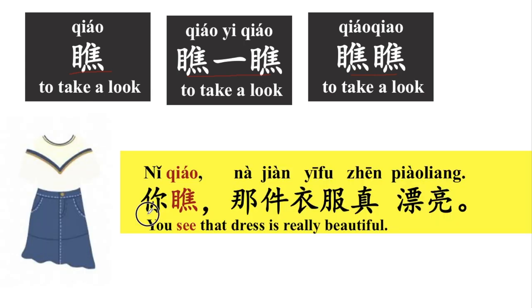For example, I can say, 你瞧，那件衣服真漂亮。You see, that dress is really beautiful. 你瞧，那件衣服真漂亮。我也可以说，你瞧瞧，那件衣服真漂亮。或者，你瞧一瞧，那件衣服真漂亮。